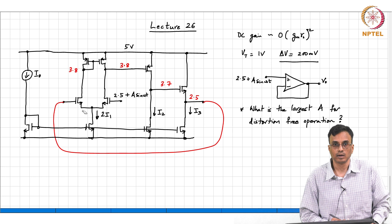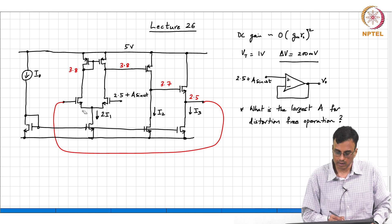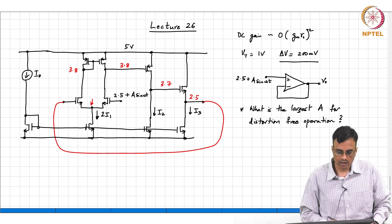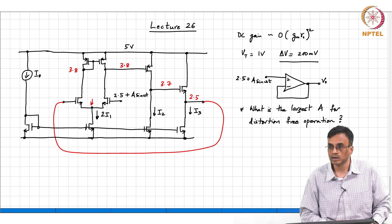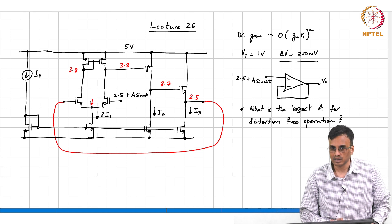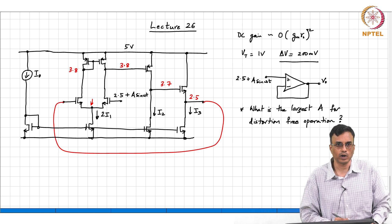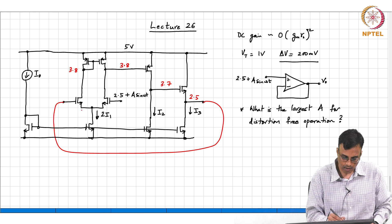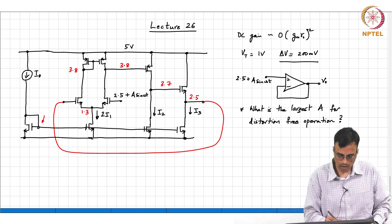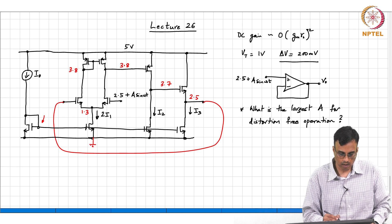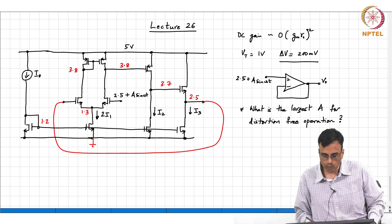What is this voltage? Which is nothing but, yeah, this voltage is nothing but the gate voltage minus VGS and what is VGS? 1.2. So, 2.5 minus 1.2 is 1.3. What is this voltage? 1.2. So, all the quiescent voltages are known.